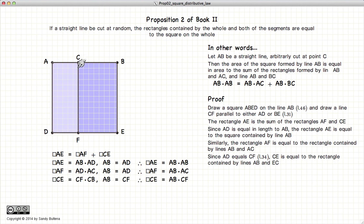Similarly, since AD is equal to AB, the rectangle AF is equal to AB times AC, and the rectangle CE is equal to AB times CB.